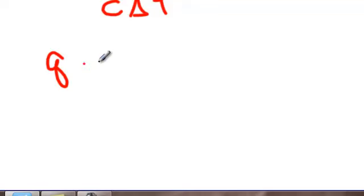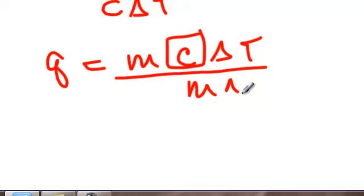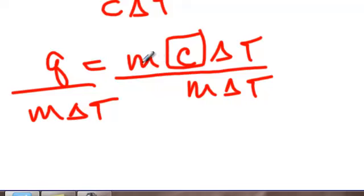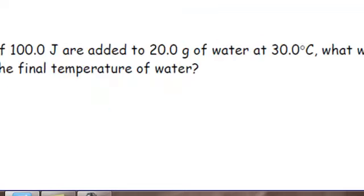What if I ask you to solve for C? Same thing. I'm trying to solve for C. This is multiplied, so everything's going to be divided by M delta T. These cancel, and I'm left with C is equal to Q divided by M delta T. So, it's very easy to solve for any variable in an equation if you just do the opposite of what you have.